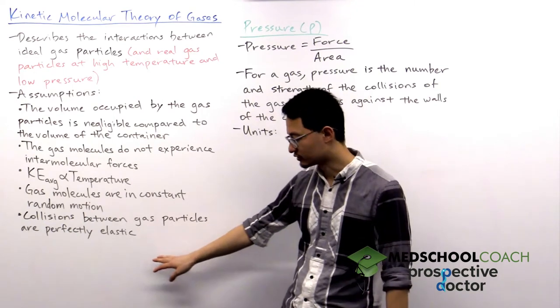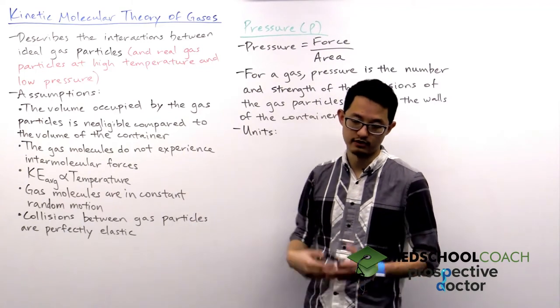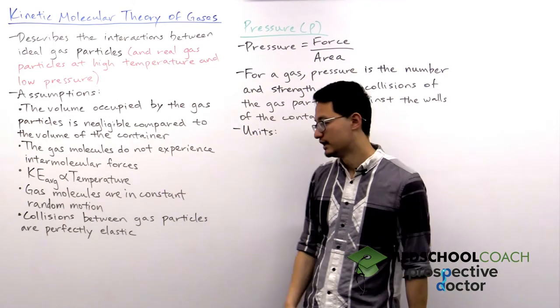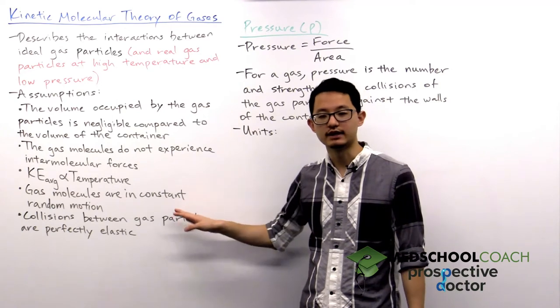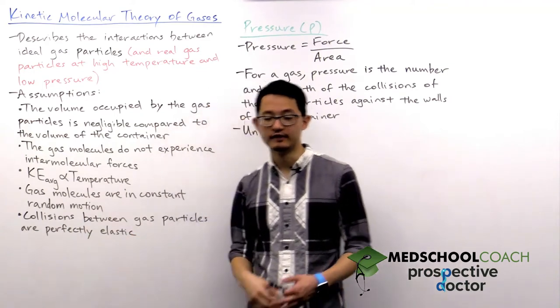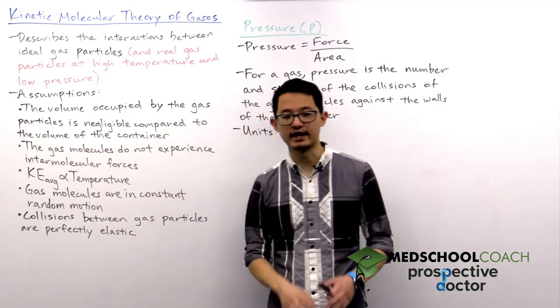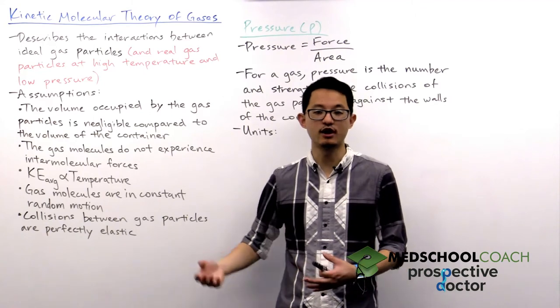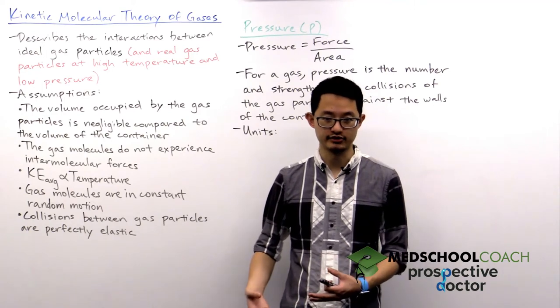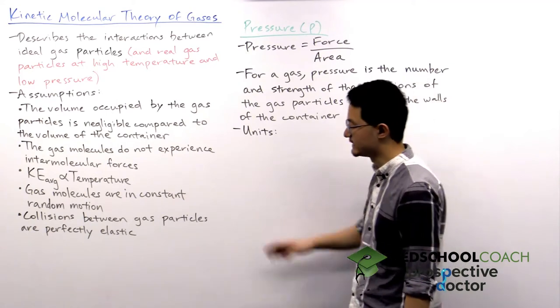Now the reason why I'm not describing these two assumptions in as much detail is because for the MCAT, the first three assumptions are the most important. You should be aware of these assumptions, but they're definitely lower yield topics for the MCAT. You might also recall this term perfectly elastic from your physics classes, so you might think oh this is something that is important, but the good news is that the MCAT doesn't test collisions as a physics topic, so you don't have to worry about learning the difference between elastic versus inelastic collisions.